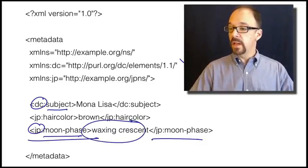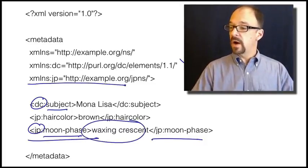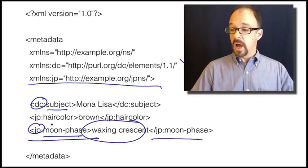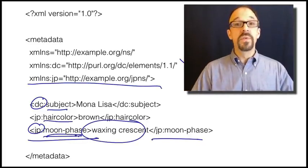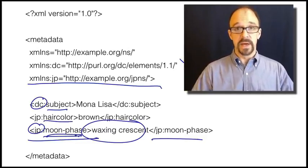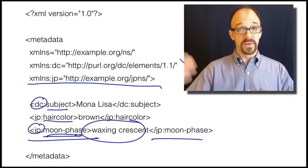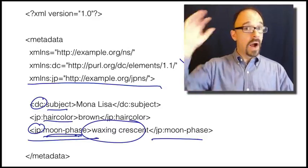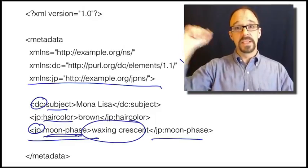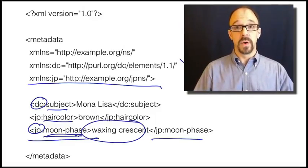You have to declare the namespace where the definitions of hair color and moon phase in the Jeffrey Pomerantz metadata schema, where those elements are defined out there on the web somewhere. I would have to have that namespace document living at some URL.